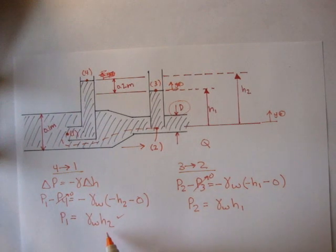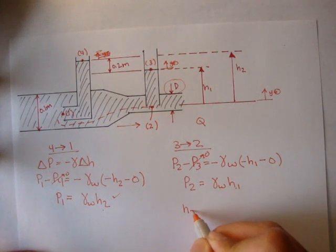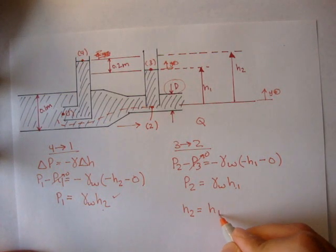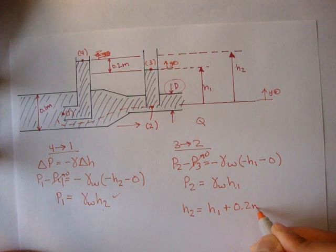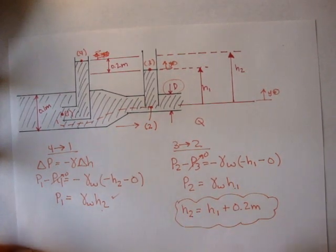Now here we have h2 and we have h1. Well, can we say that h2 is equal to h1 plus 0.2 meters? Can we say this?